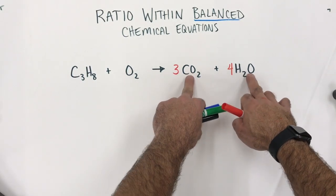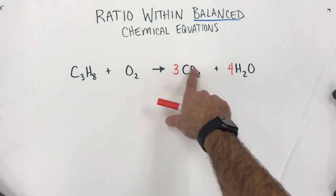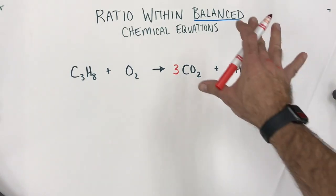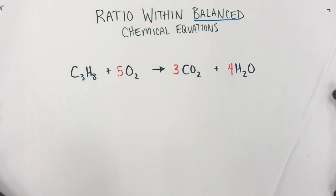Now, the three and the four have also influenced oxygen. So, if we look here, that's three times two or six oxygen plus another four. So, that's ten oxygen on this side. So, we need to start with ten oxygen atoms on this side.